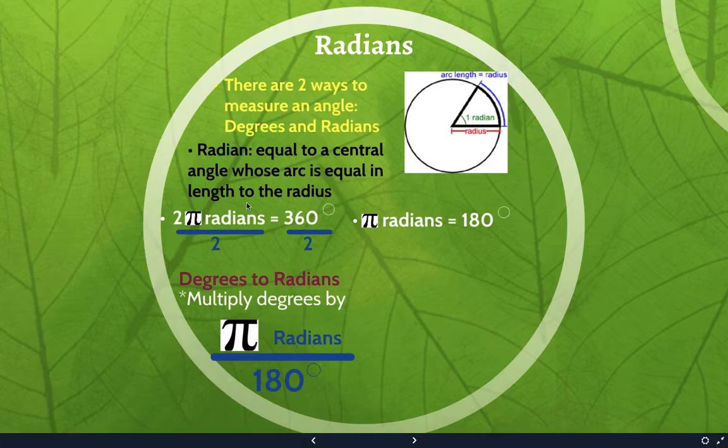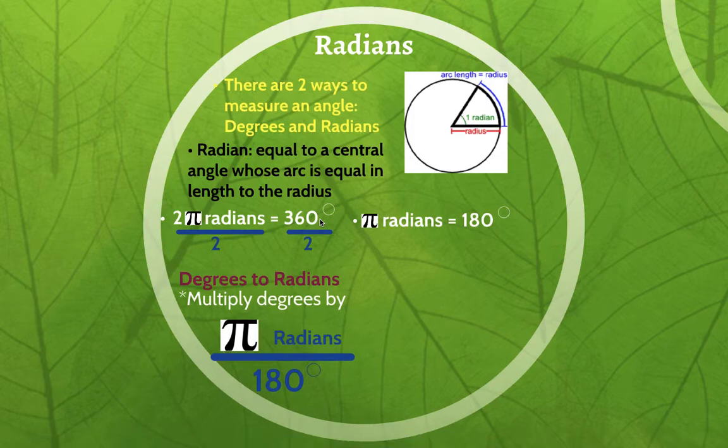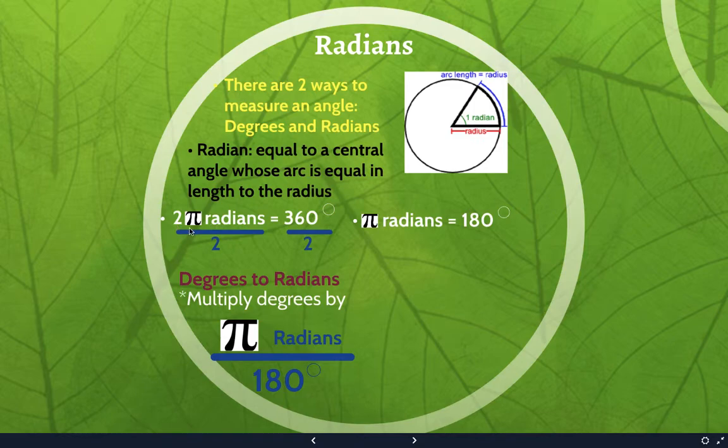We talked about this on the Prezi, but in one full rotation there are 360 degrees and there are 2π radians, which comes from the circumference of a circle.